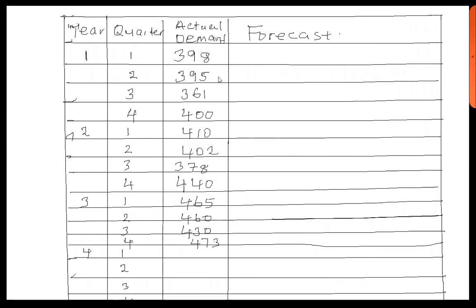We go to period 4 and compute: 398 plus 395 plus 361, the last three actual demand values, divided by 3, which gives 384.67. So this is our forecast demand for quarter 4 of year 1. Then we move on — the next period is quarter 1 of year 2.